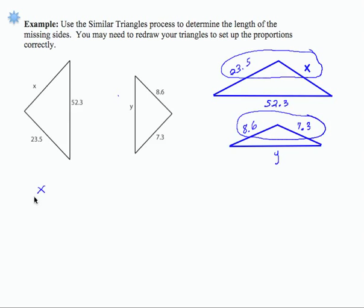I'm going to set up the proportion x over 23.5 equals 7.3 divided by 8.6. If I use a partial cross product here, I get x equals 7.3 times 23.5 divided by 8.6. If I perform those computations, multiply and then divide and round to the nearest tenth, I get x equals 19.9.